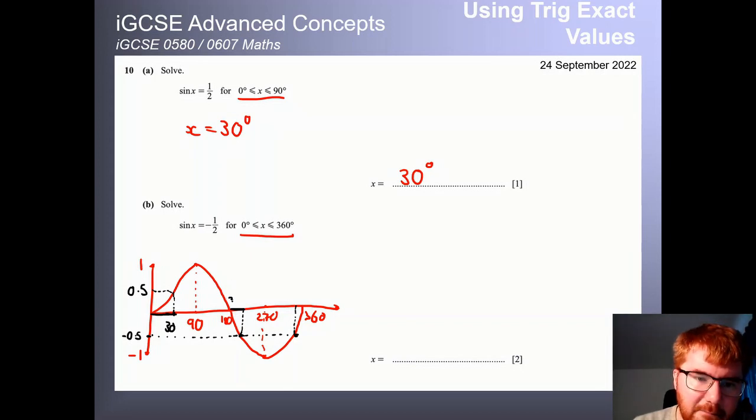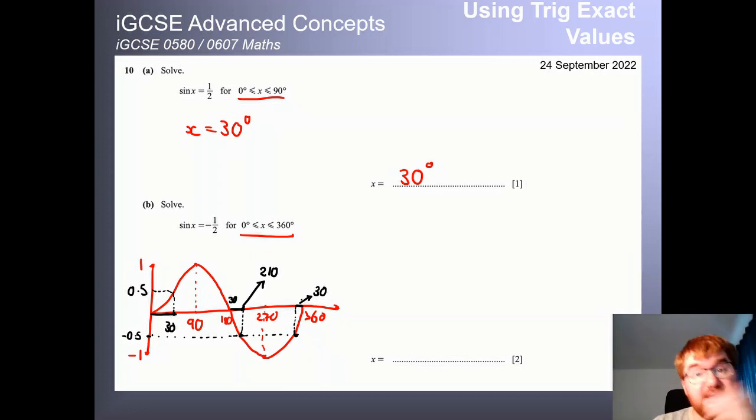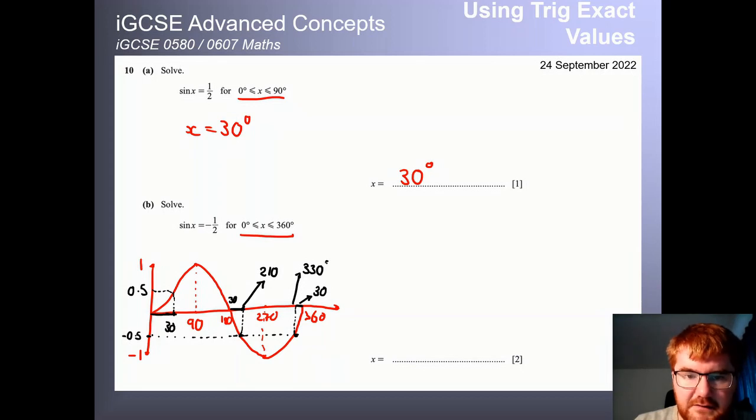So this is 180 here. This length in black is 30. Then that value here is equal to 210, 180 plus 30. Likewise, if we use our sketch, this black length here is 30. And we want to go backwards from 360. So 360 minus 30 will be equal to 330 degrees.